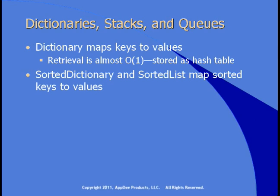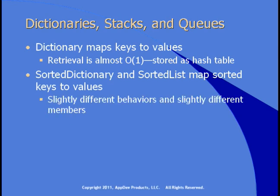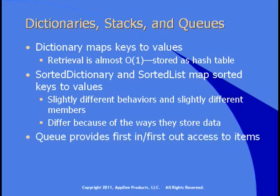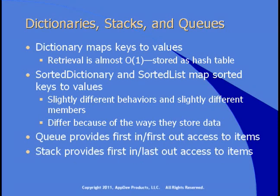SortedDictionary and SortedList classes map sorted keys to values. The dictionary class isn't in order, so if you need a dictionary that maintains its items in sorted order, you'll need to use one of those classes. They differ because of the way they store their data internally. The Queue class provides first-in, first-out access to items, while the Stack class provides first-in, last-out access. These classes help you maintain the order of items in your list.